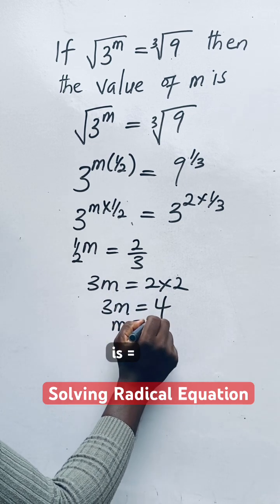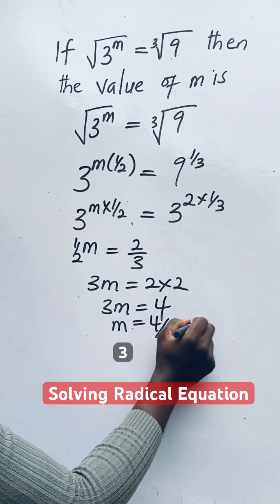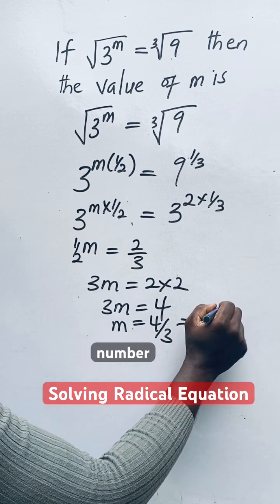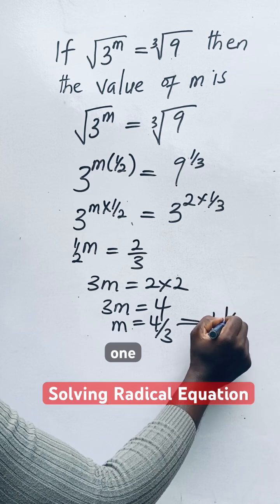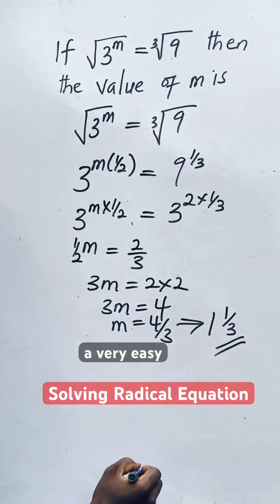So you have M is equal to 4 over 3, which implies one whole number 1 over 3. A very easy one.